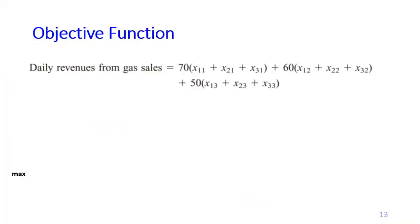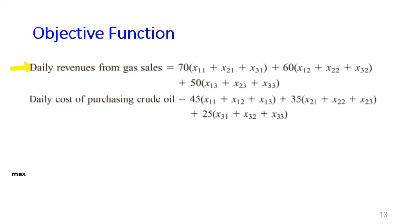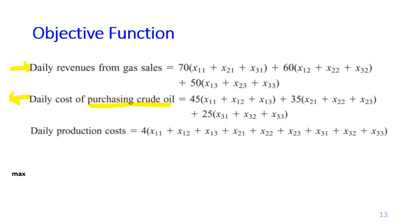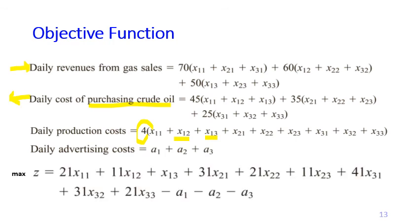From the revenue side we have the daily revenue from selling gas one, gas two, and gas three. From the cost side we have the daily cost of purchasing crude oil. We also have the transformation cost of four dollars per barrel for converting crude oil to gasoline, regardless of the types involved. We also have the advertising cost for each type of gasoline. Summing all these components creates the complete objective function that we would like to maximize.